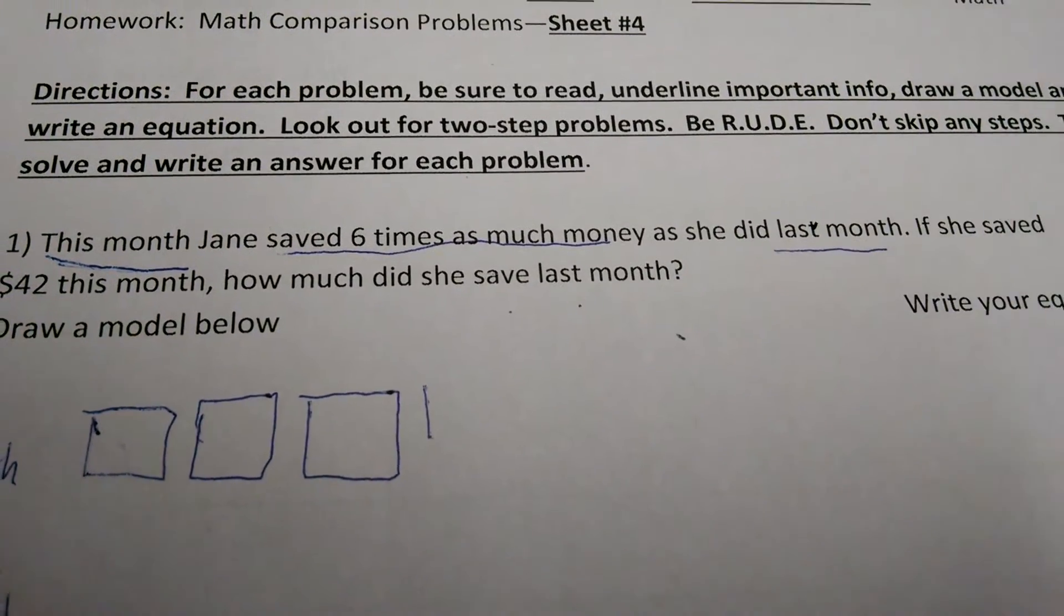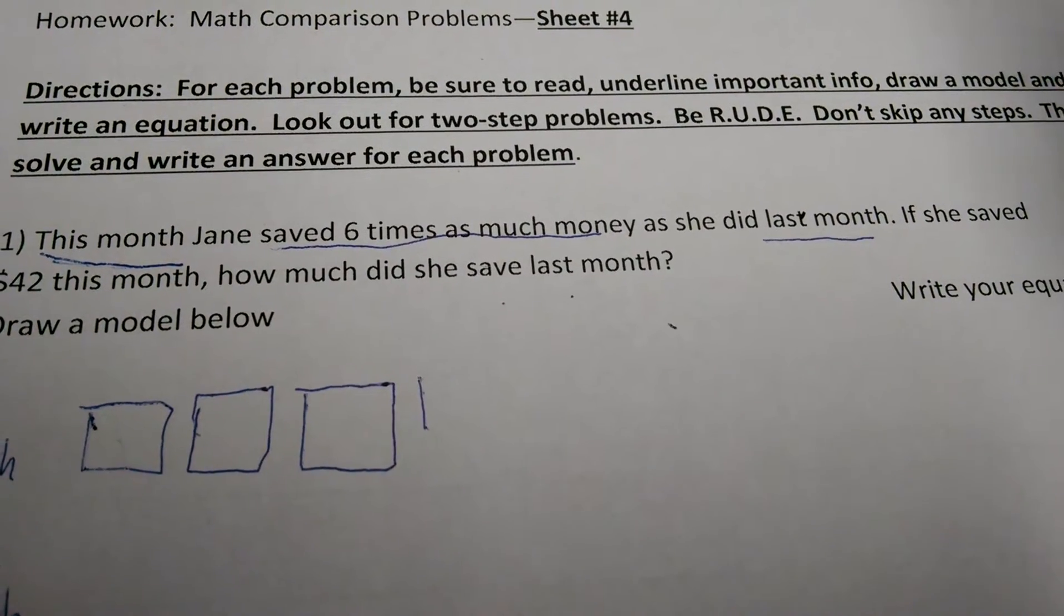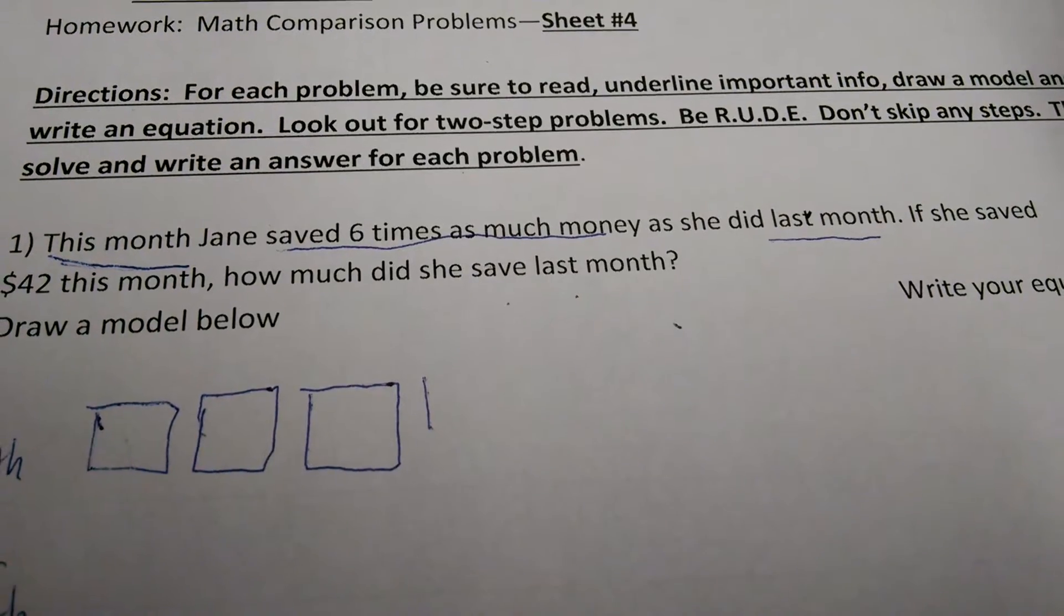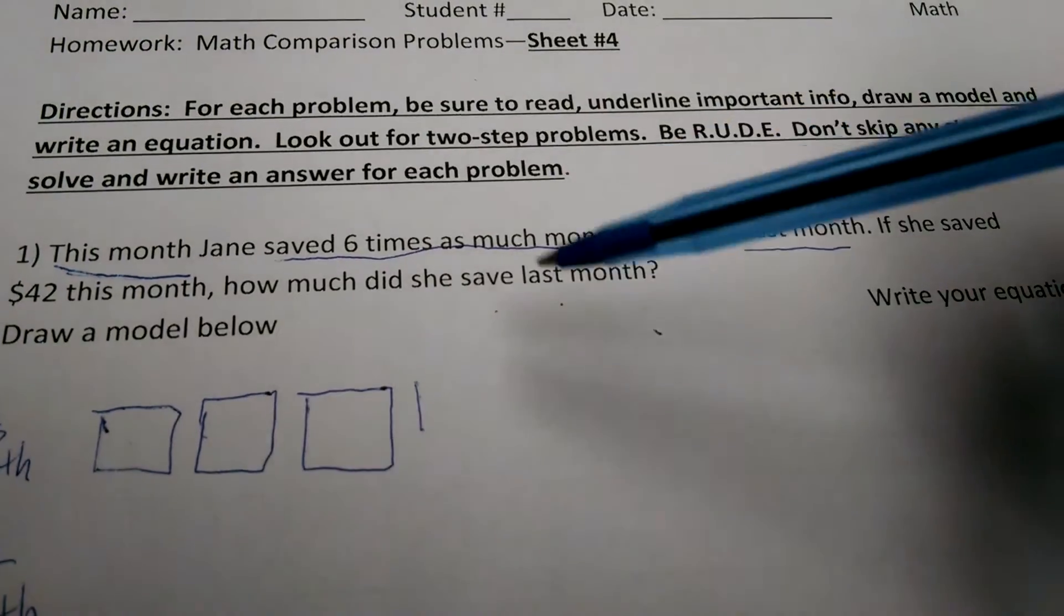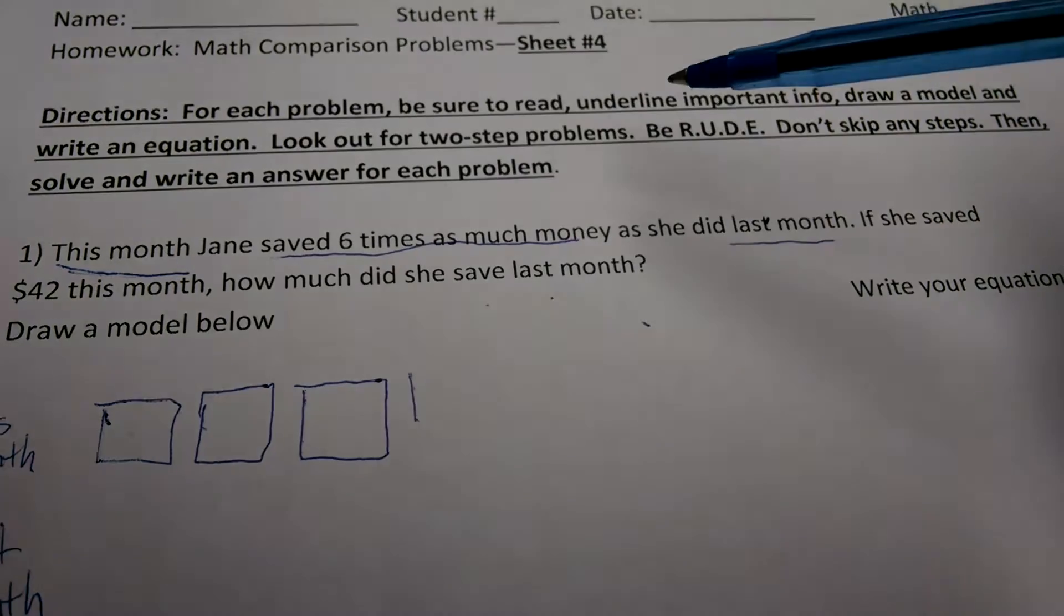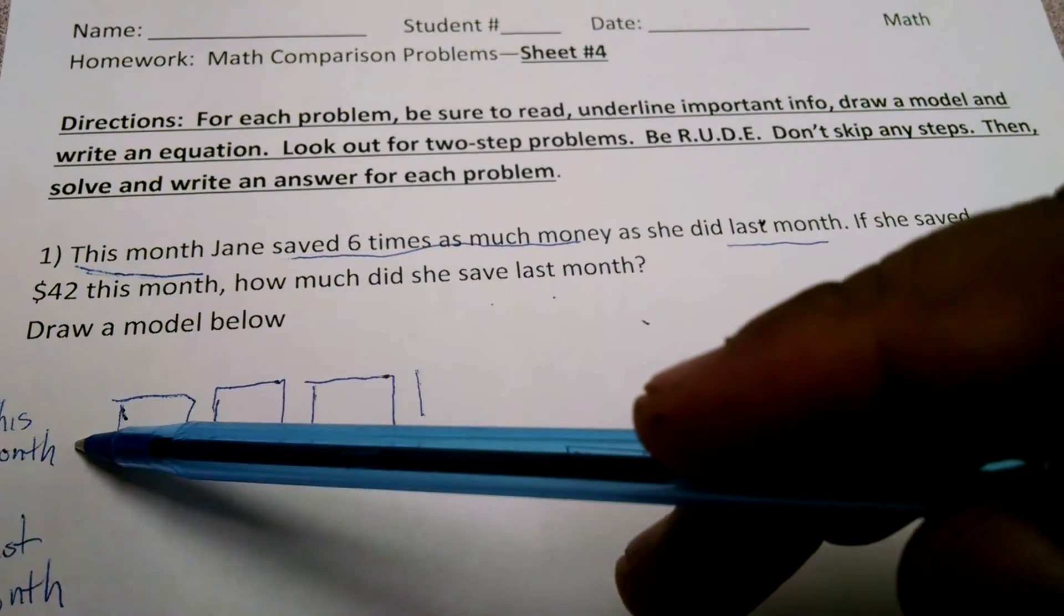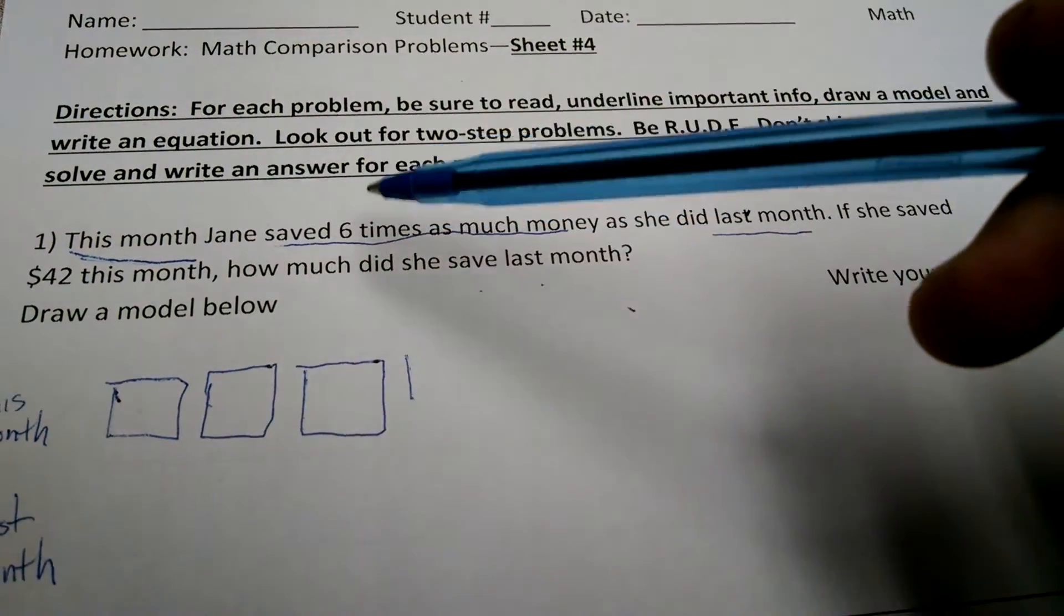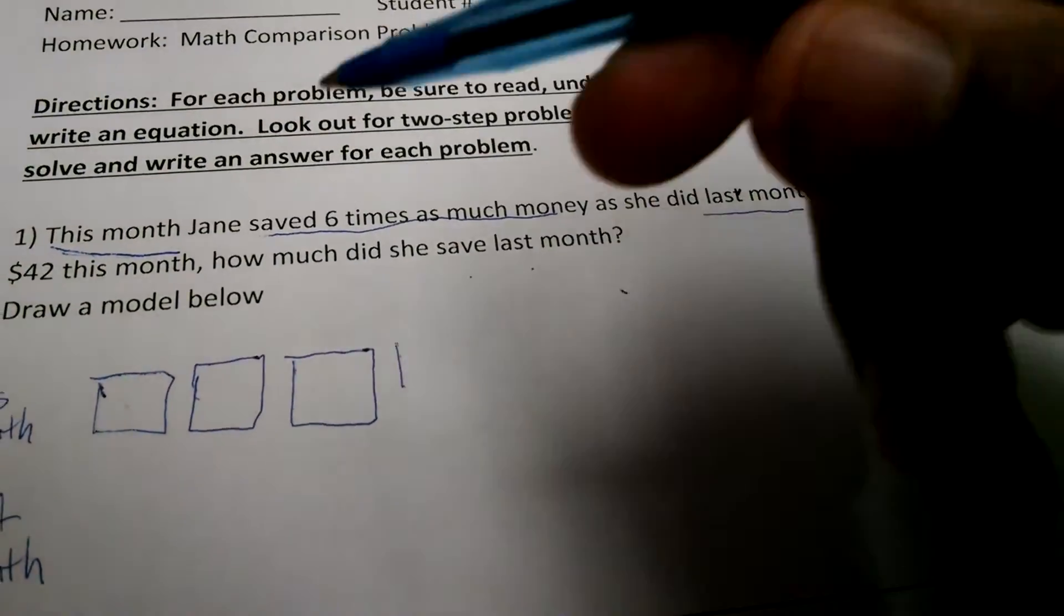Okay. So, number one. This month, Jane saved six times as much money as she did last month. If she saved $42 this month, how much did she save last month? Well, when I see this, I'm thinking about what are they asking me to do here? I know she saved, Jane saved some money this month. And she saved some money last month. Now, it says this month, Jane saved six times as much as last. So, when I draw this model, I'm going to use these little bars.